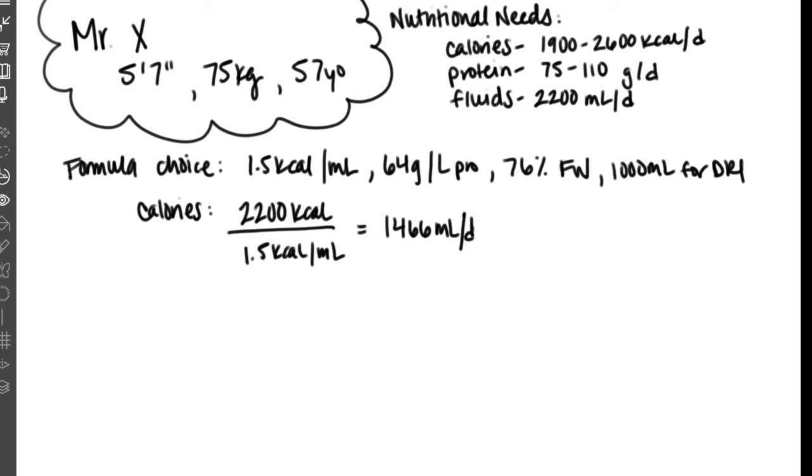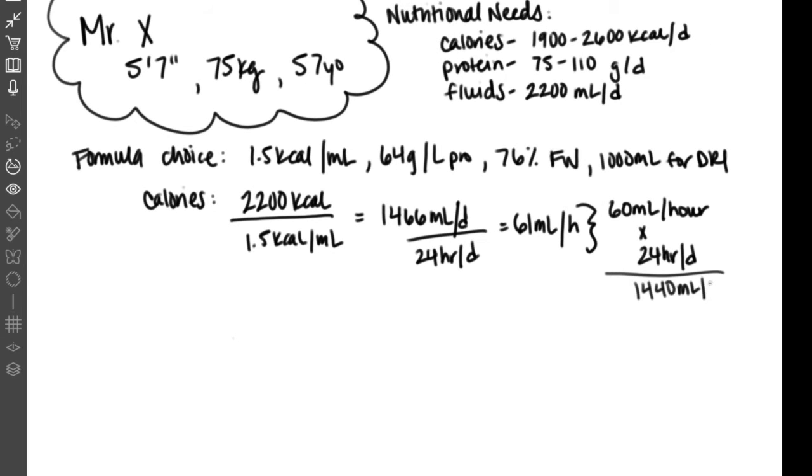If we divide that by 24, because there are 24 hours in the day, that gives us 61 milliliters. Usually in the hospital setting, we like to use numbers in increments of five. So we either want to do 60 or 65 milliliters to give us a nice whole number. For him, we're going to pick 60 milliliters. If we do 60 milliliters times 24 hours in the day, that gives us our new volume of 1,440 milliliters. If we multiply that by 1.5, because it's a 1.5 calorie per milliliter formula, that gives us 2,160 calories for the day, which is within our predictive range.